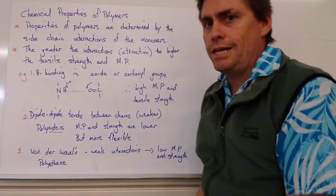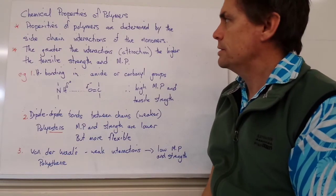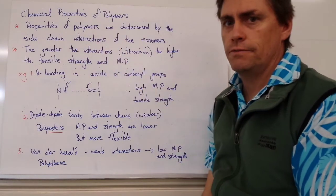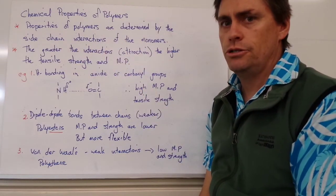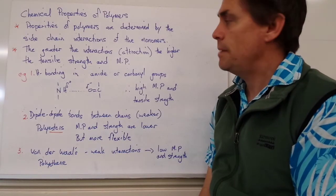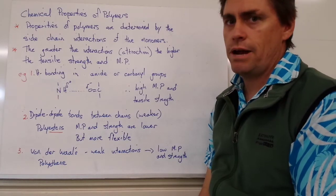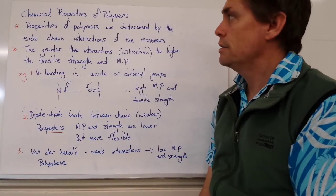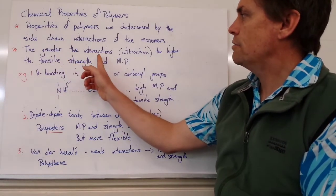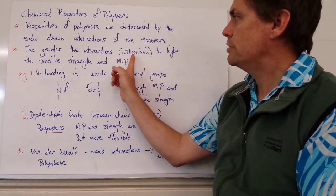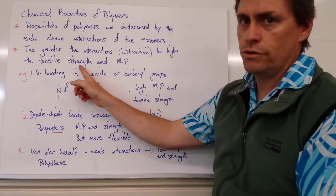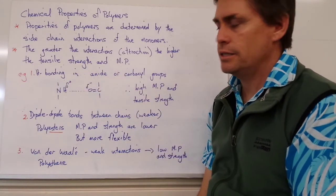Let's look at what influences the chemical properties of polymers. The properties are determined by the side chain interactions of those monomers. We can get a substitution of a hydrogen for a halide or for another alkyl group, and it's the interaction between these side chains that will produce the properties of that particular polymer. In general, the greater the interaction - in this case an attraction between those two side chains - the higher the tensile strength and the higher the melting point.